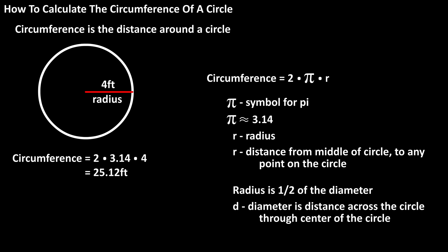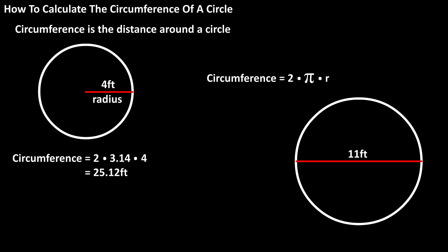As another example, if we wanted to know the circumference of a circle with a diameter of 11 feet, we would first divide the diameter by 2 to get the radius, which equals 5.5 feet. And now we use the formula. Circumference equals 2 times 3.14 times 5.5, which equals approximately 34.54 feet.